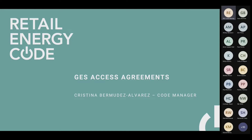The retail energy location guidance document is under the REC version 3 baseline documents page, on the fourth tab which is category 3 products. Around two-thirds to three-quarters of the way down that page there's the retail energy location guidance document version 1.0 with a download link. If you've got questions about why the REL has been introduced, I recommend you check that out. Let's now hand over to Christina.